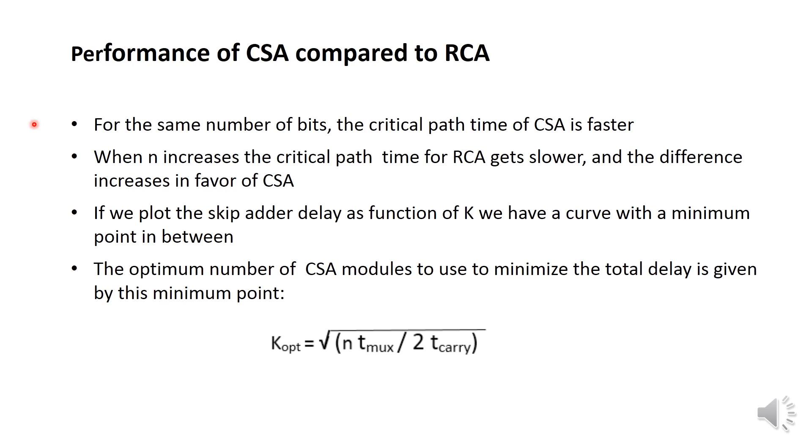Let's finally compare the performance of the carry skip adder compared to the ripple carry adder. For the same number of bits, the critical path time of the carry skip adder is faster. When n increases, the critical path time for the ripple carry adder gets slower and the difference increases in favor of the carry skip adder.